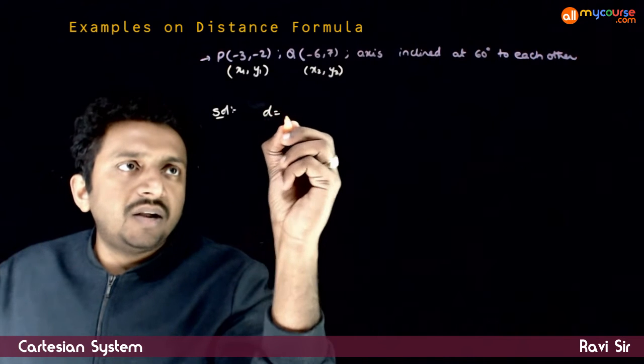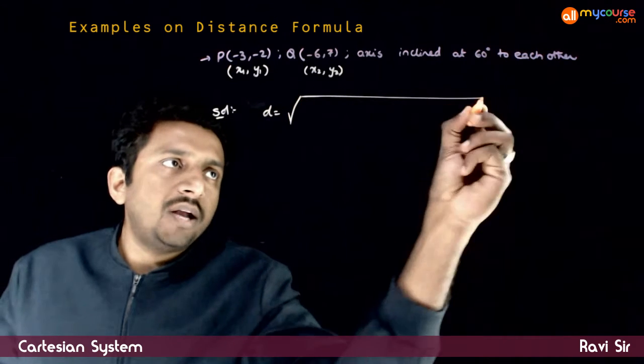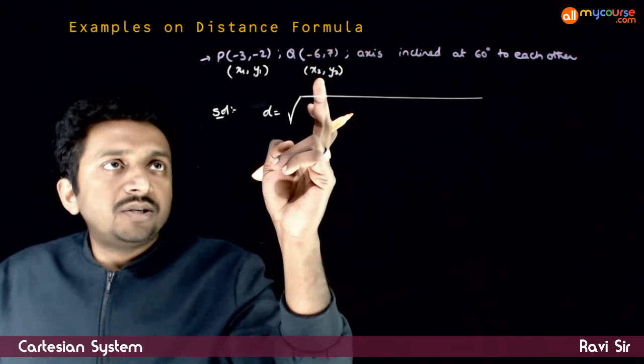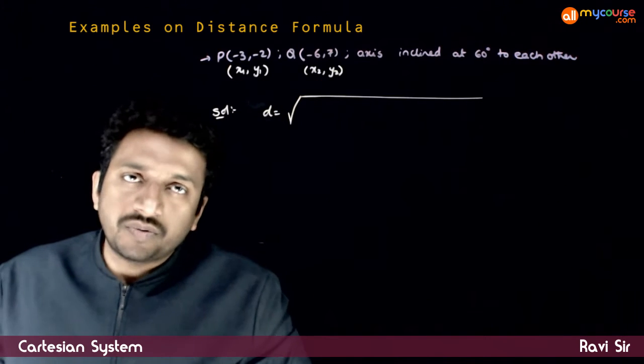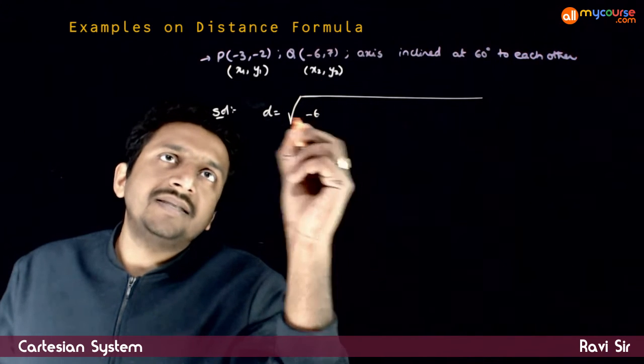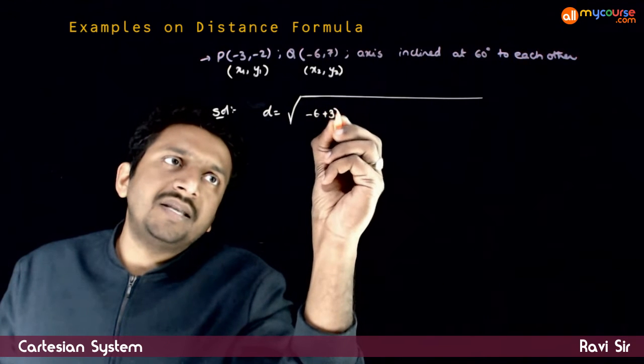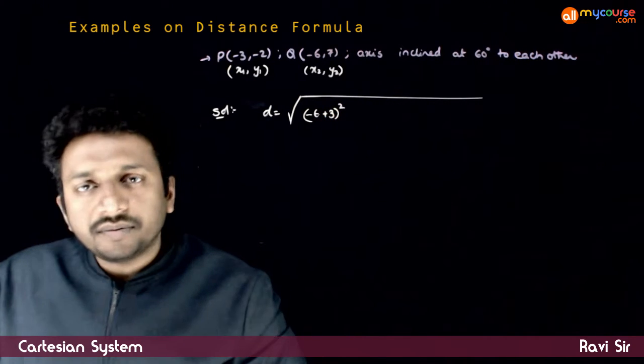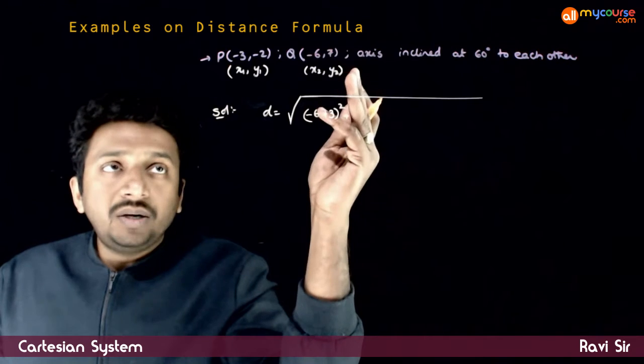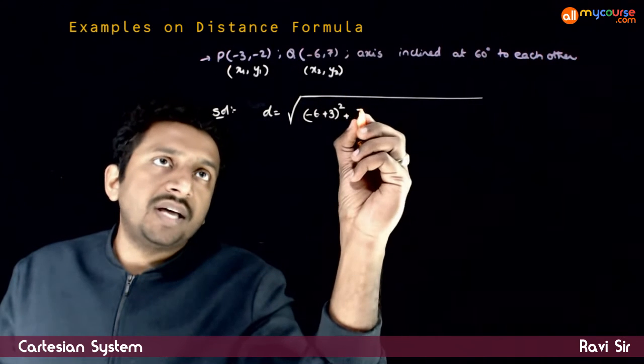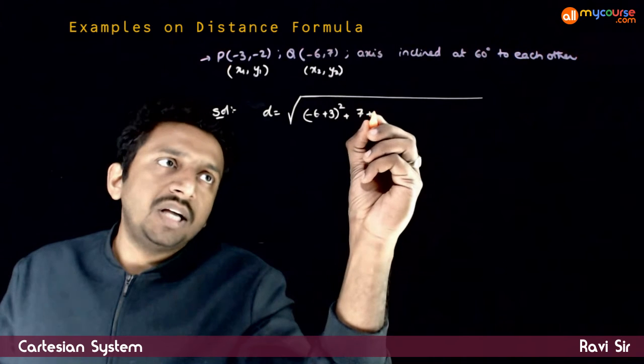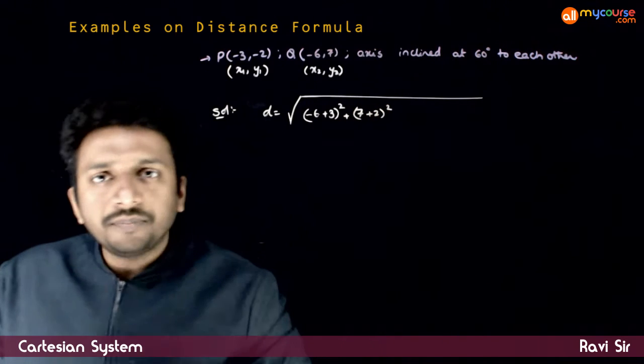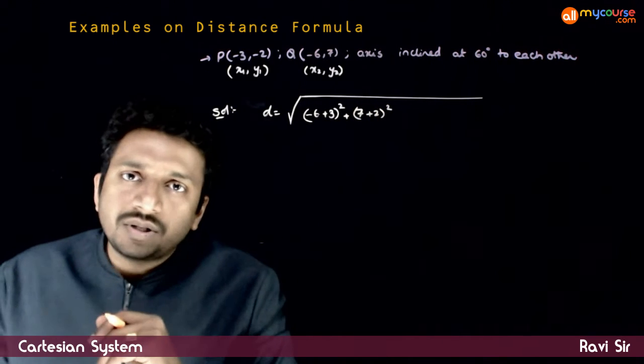Distance equals square root of: (x2 minus x1) whole square, minus 6 plus 3 whole square, plus (y2 minus y1) whole square, 7 minus of minus 2 is plus 2 whole square...